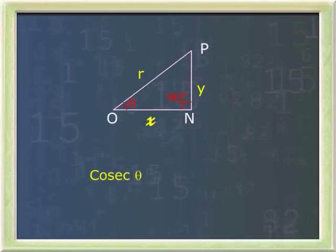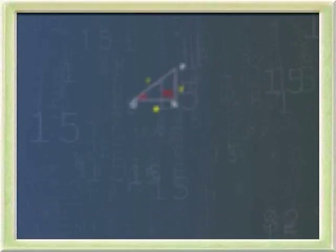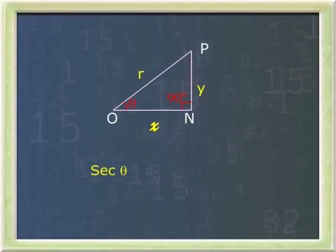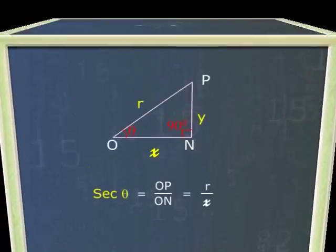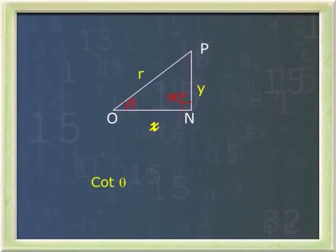Cosecant of angle theta can be derived as the ratio of hypotenuse to side opposite to theta, that is R by Y. Cotangent of angle theta can be derived as the ratio of side adjacent to theta by side opposite to theta, that is X by Y.